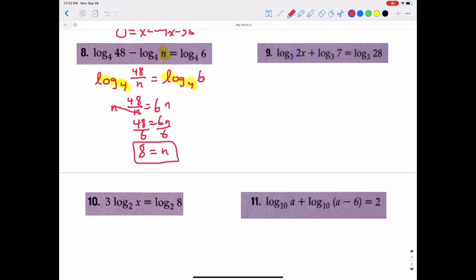Number 9, we have the addition of two logs on the left side. They're both log base 3s. So we are going to combine those together into a single logarithm through multiplication. So that will be log base 3 of 2x times 7 equals log base 3 of 28. And since both sides of the equation are both log base 3s, that just means 2x times 7 equals 28.